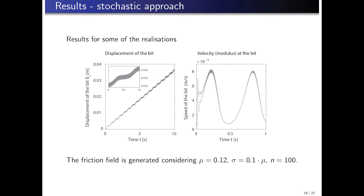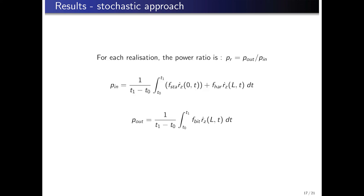Now, we show a comparison of the results obtained in the stochastic case. Remembering that the mean value for the distribution used in the friction field was 0.12, and the deviation was 0.1 mu, the results of some of the realizations are overlaid here, both for the displacements of the bit and its speed in the direction of the penetration.